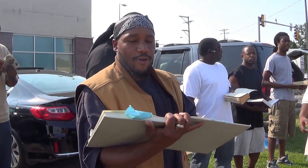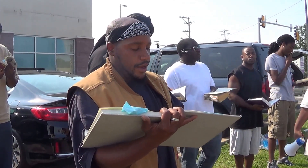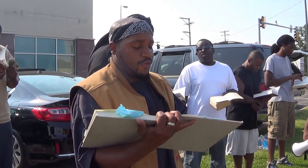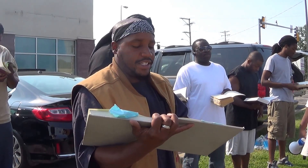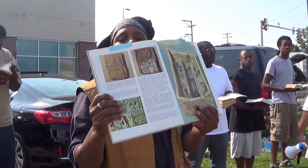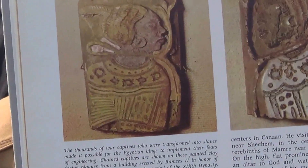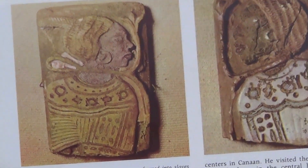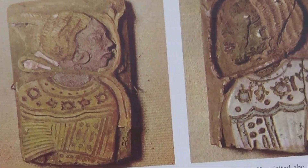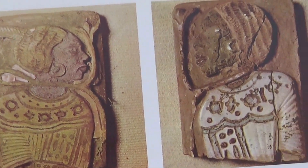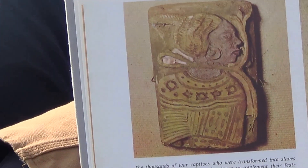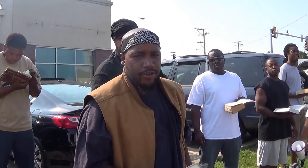Chained captives are shown on these painted clay facing plaques from a building erected by Ramses II. That was a pharaoh in Egypt, at the time of our exodus out of Egypt, in honor of the king's brave warriors from the period of the 19th dynasty. Well, it ain't just reading the Bible and thinking it sounded like us. We went and got the research as well. So you Egyptologists, you Ray Hagen flunkies, ain't got a leg to stand on.